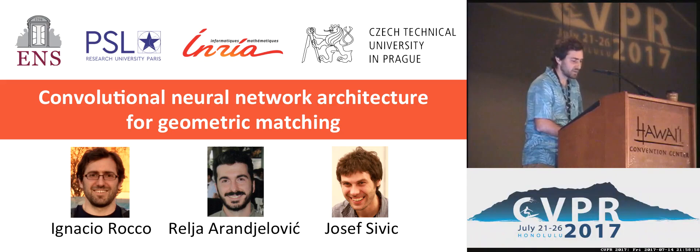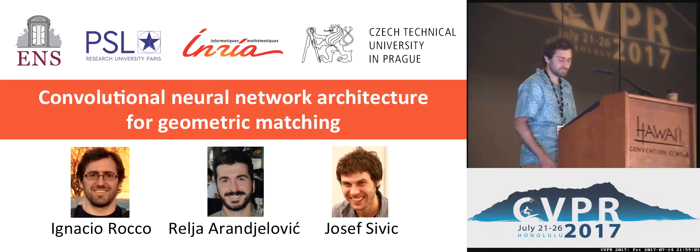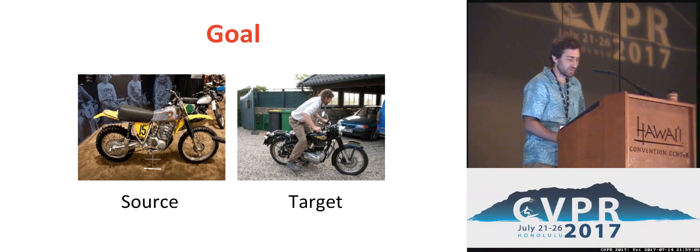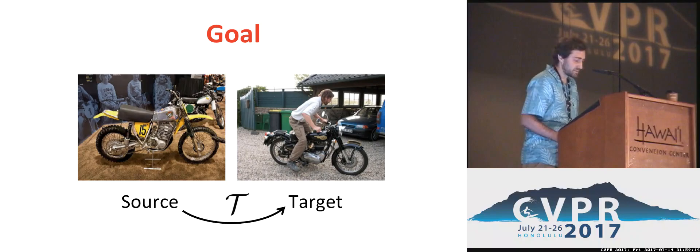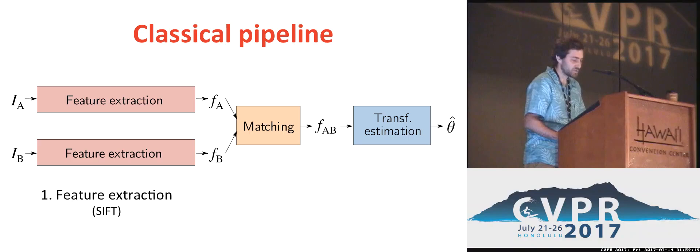Hello everybody. I'm Ignacio Rocco and I'm going to present our work CNR Architecture for Geometric Matching. The goal of this work is to solve the image alignment problem, where given a source and a target image, we seek to find a transformation T that aligns the source image to the target image.